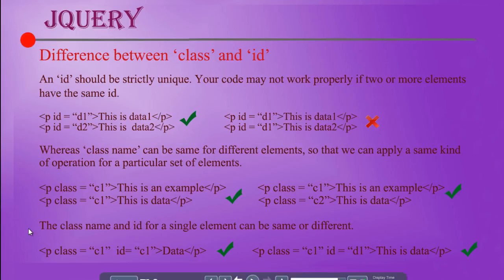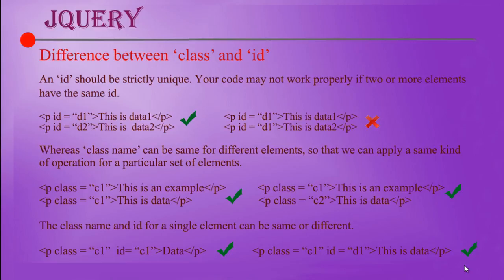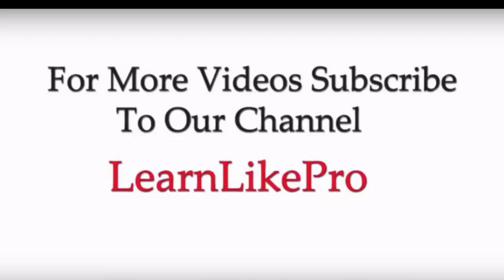For a single element, the class name and id name can be the same, but id names across different elements should be different. The class name and id name can also be different for a single element — both are valid. This is about the syntax of jQuery and the usage of classes and ids. We'll learn about the implementation of jQuery in detail in our next videos. For any queries, just comment below and we are ready to help. If you like this video, please like and share it, and subscribe to our channel Learn Like Pro. Thank you.